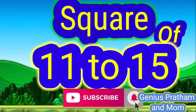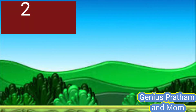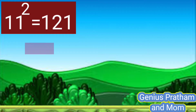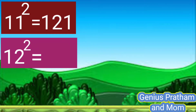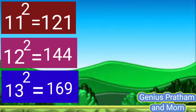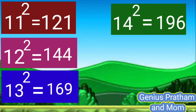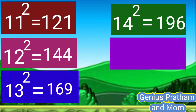Now square of 11 to 15 numbers. Square of 11 is 121. Square of 12 is 144. Square of 13 is 169. Square of 14 is 196. Square of 15 is 225.